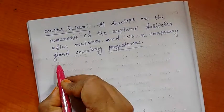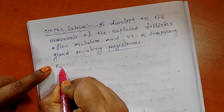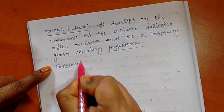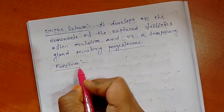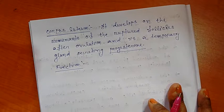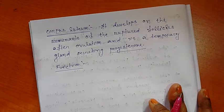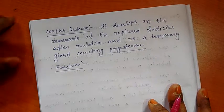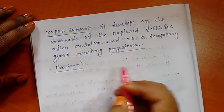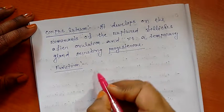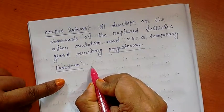Next, coming to the function of progesterone. Progesterone is secreted from corpus luteum. Corpus luteum is the remaining portion of the follicular cells of the ovary after ovulation.